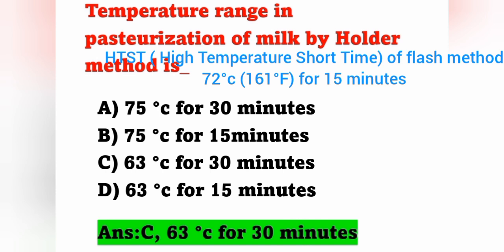Another method is the High Temperature Short Time (HTST) or Flash method, in which the temperature is 72 degrees Celsius (161 degrees Fahrenheit) for 15 minutes. The Holder method uses 63°C for 30 minutes, and the HTST Flash method uses 72°C for 15 minutes.